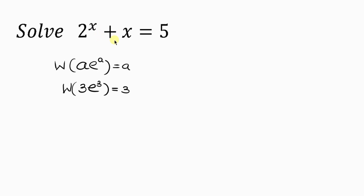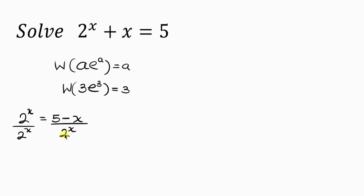Our first step is to move x to the right-hand side, giving us 2 to the x equal to 5 minus x. Next, we divide both sides by 2 to the x. The left-hand side becomes 1, so we have 1 equal to (5 minus x) divided by 2 to the x.